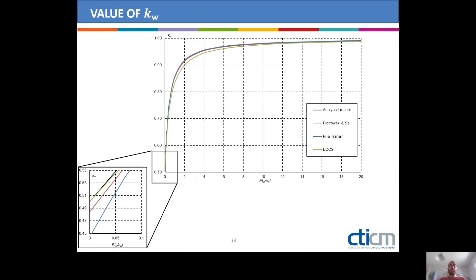We can compare the value of KW that we obtained with the values given by Piotrowski and Zikowski, Pi and Traher, and ECCS. We can see good agreement among the four proposals, and a small difference when warping tends to be fixed — as shown in the detail here — because ECCS and the analytical model tend to 0.5, whereas Piotrowski and Pi and Traher tend to values slightly different from that.